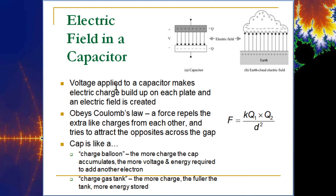Voltage applied to a capacitor makes electric charge build up on each plate, creating an electric field. It still obeys Coulomb's law: the force repels the extra like charges from each other and tries to attract the opposite charges across the gap. That's why there's energy storage — they're trying to pull one another.